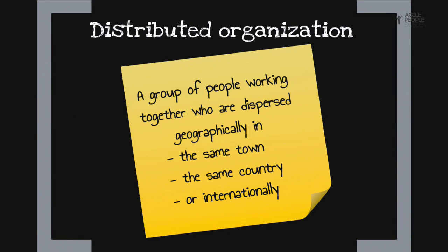So how do you define a distributed organization? A distributed organization to me is a group of people that are working together for the same purpose, but they're not necessarily bound to the walls of an office. They can be working in the same town but from different locations, in the same country but in different cities, or distributed across different countries. A lot of us think of distributed teams as only offshoring companies in India or faraway countries, but that's not the only form — it can also be the same company, not two different companies working together.